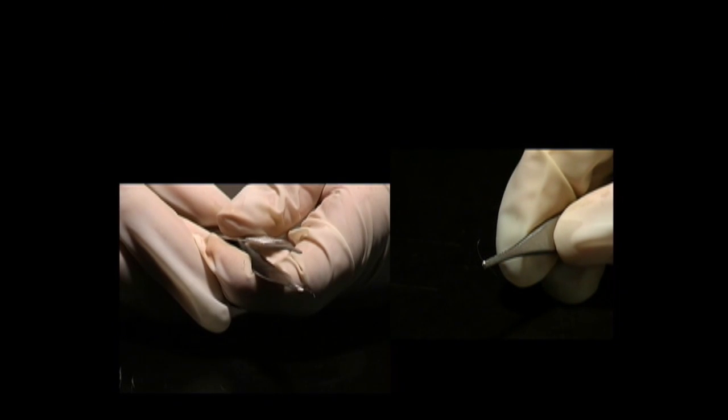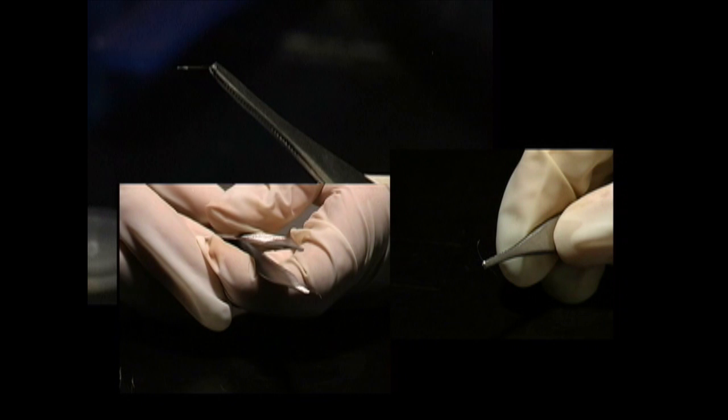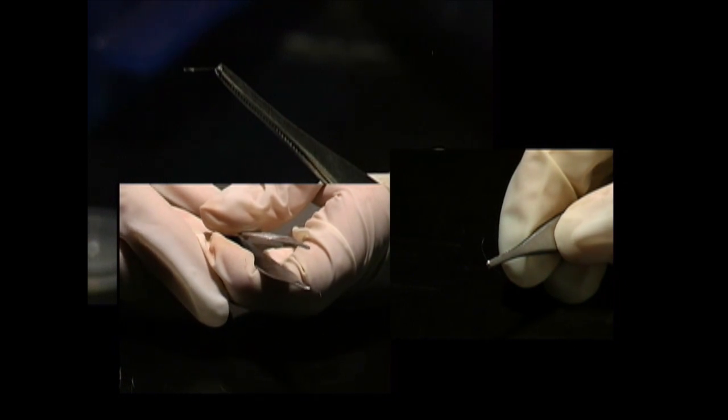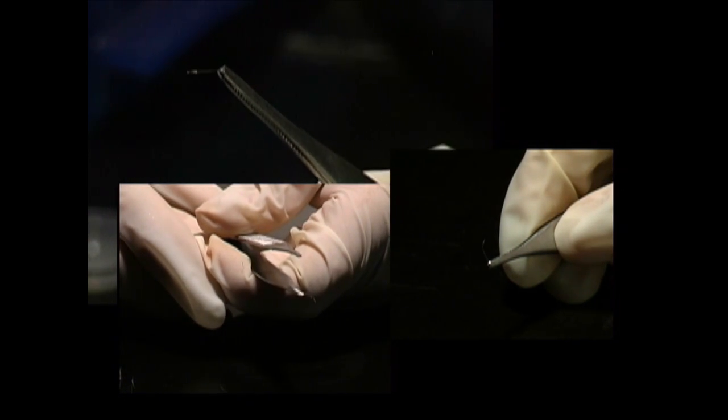One simple way of obtaining cells is from eyebrow hairs. Pluck three or four that contain a sheath, a barrel-like structure that surrounds the base of the hair. Sheaths are often white.